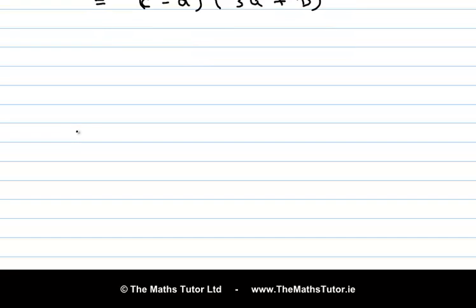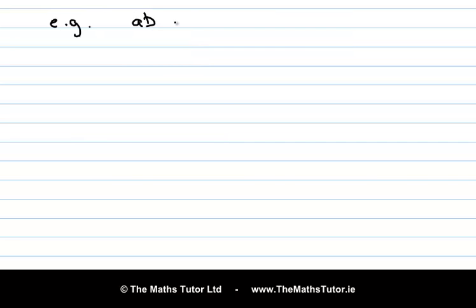And another example. ab plus 5 plus 5a plus b. The first two terms don't actually have a common factor. So what we need to do is rearrange. So if we put ab and 5a together, then we have plus 5 and plus b. That's no good because these two have a common factor, but these two don't.